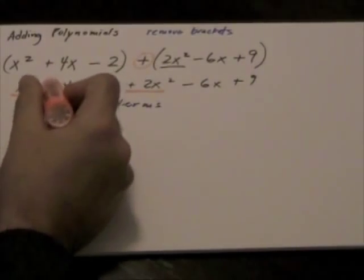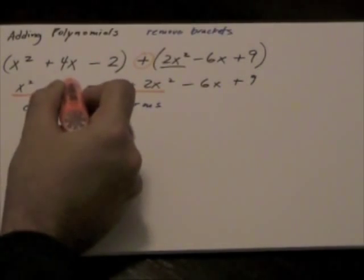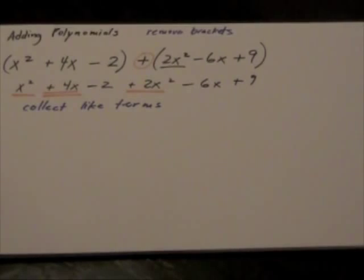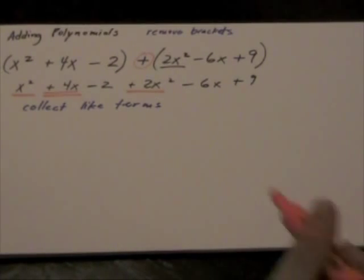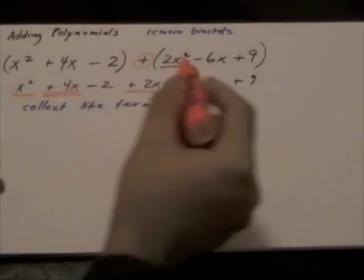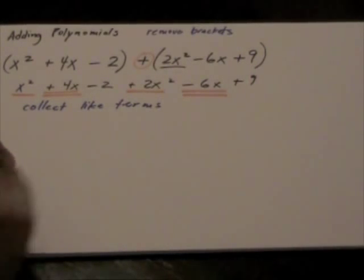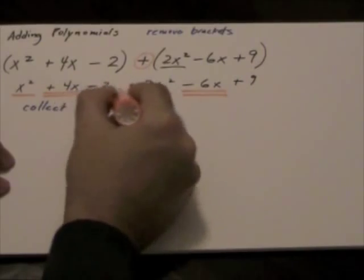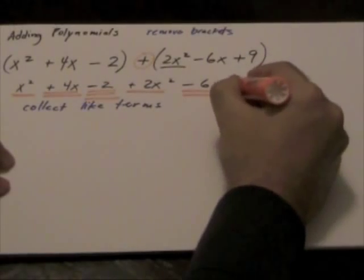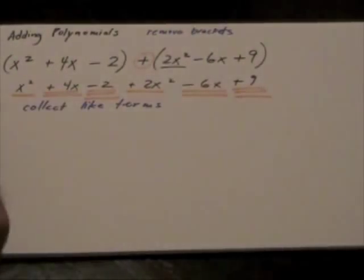Positive 4x. And notice how I'm taking the sign in front with us when I'm collecting the like terms. So positive 4x is a like term with negative 6x. Negative 2 is a like term with positive 9.